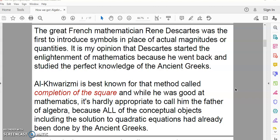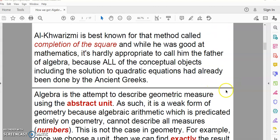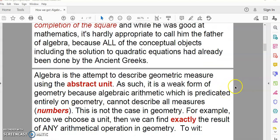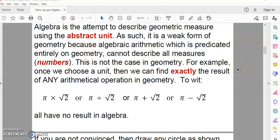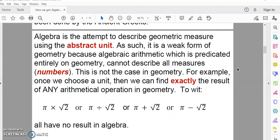Now, algebra is really a weakened form of geometry. It's an attempt to describe geometric measure or geometric objects using the abstract unit. And it's predicated entirely on geometry. Now, algebra cannot describe all measures. In other words, algebra does not have a name for all the possible magnitudes, as is the case in geometry.